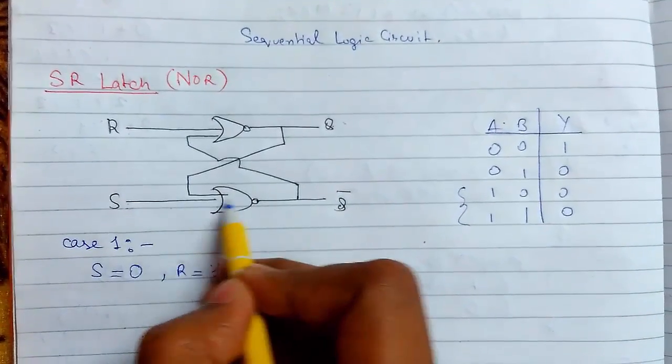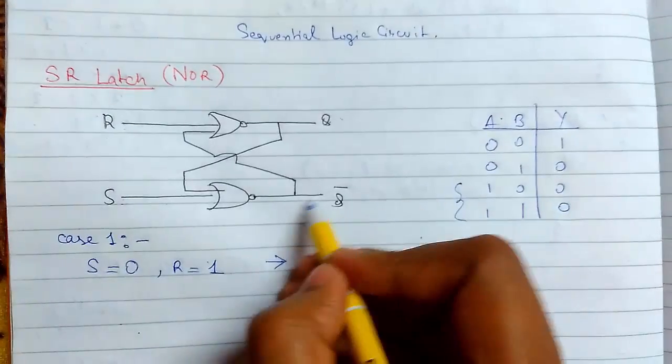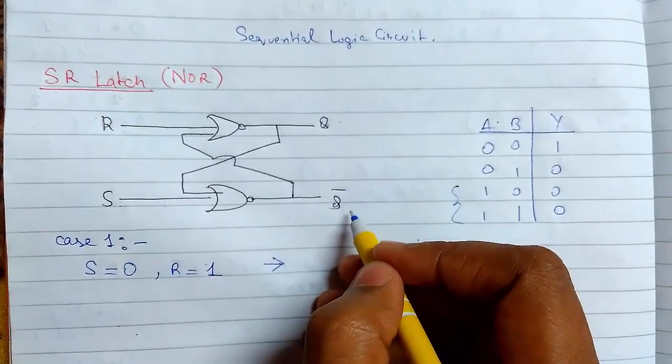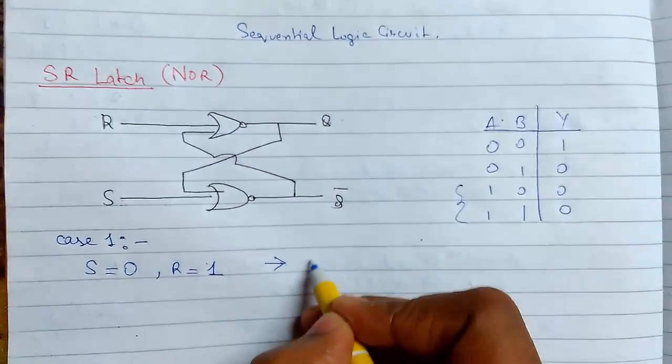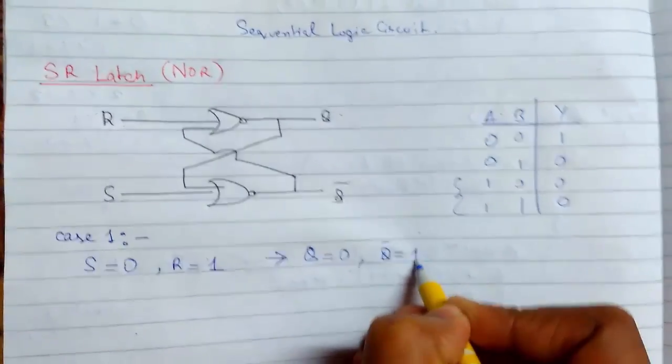So our input is 0 and 0, so 0, 0 is 1, so we get Q bar as 1. We see that our Q is 0 and our Q bar is 1.